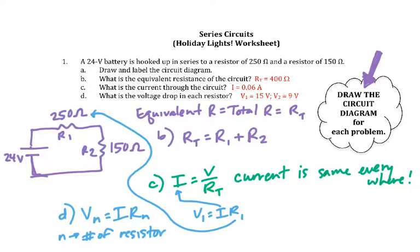Voltage drop for R2 would be V2 equals I times R2. Use the same I because current is the same everywhere in series, but sub in the resistance for R2 for that one.